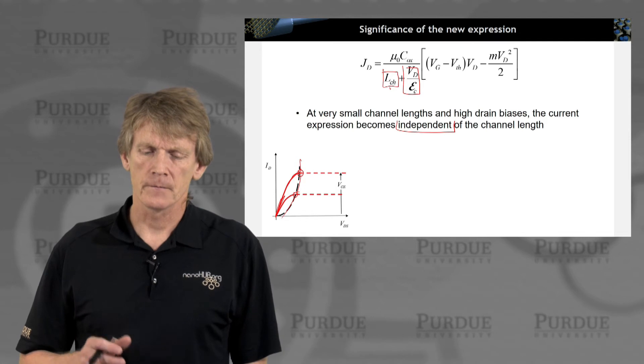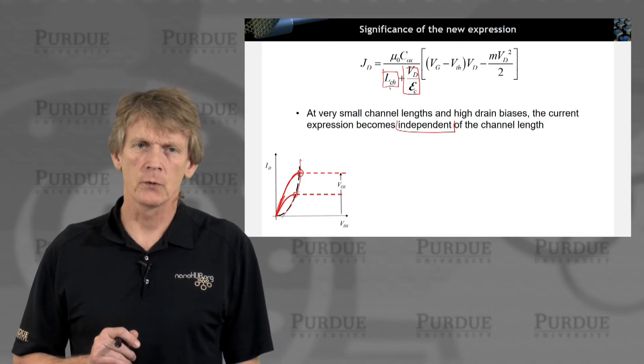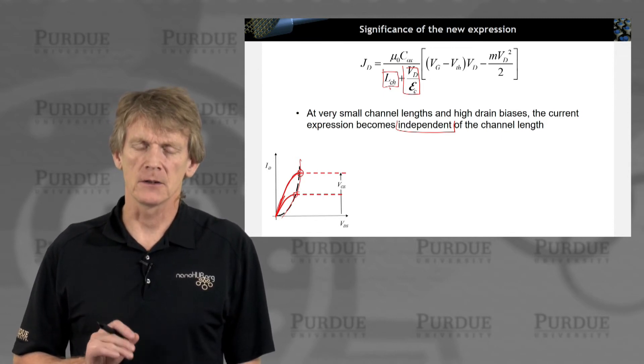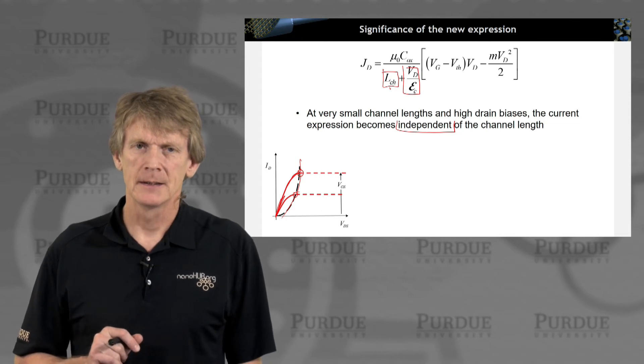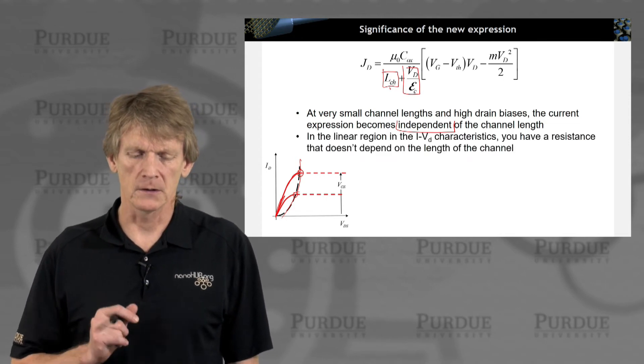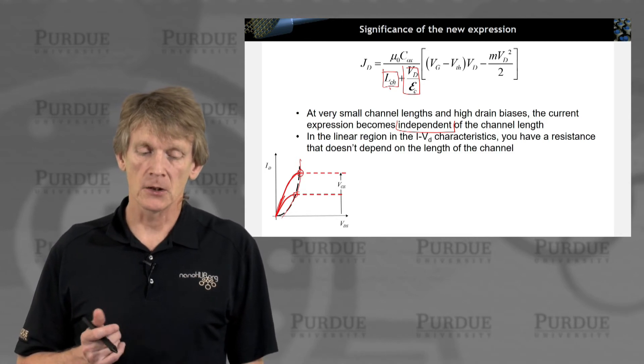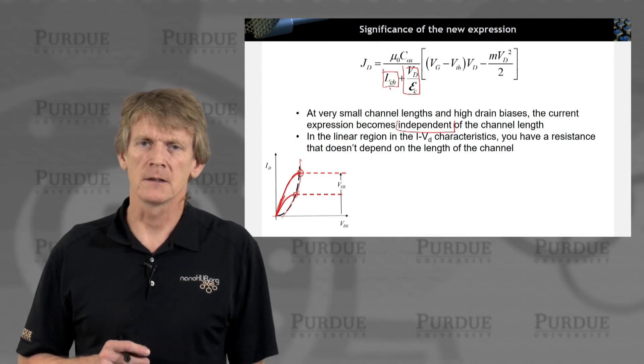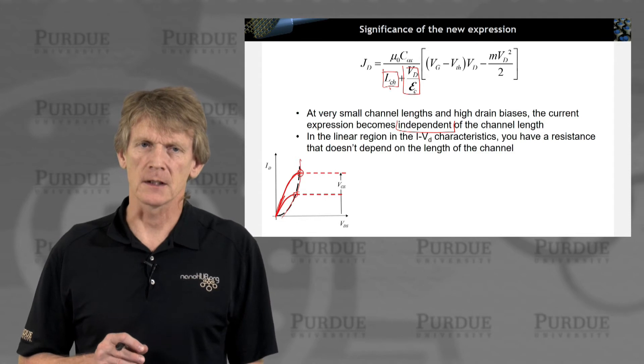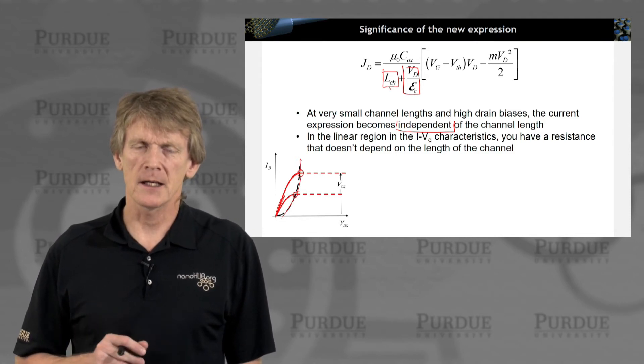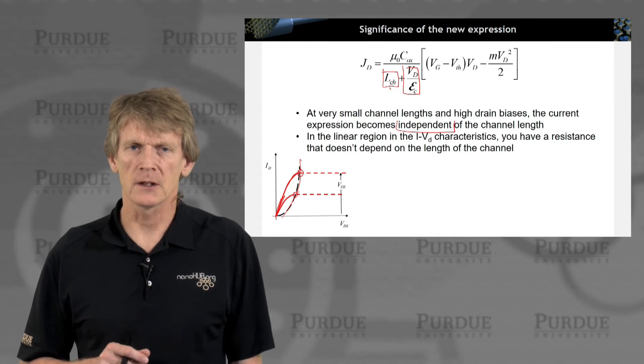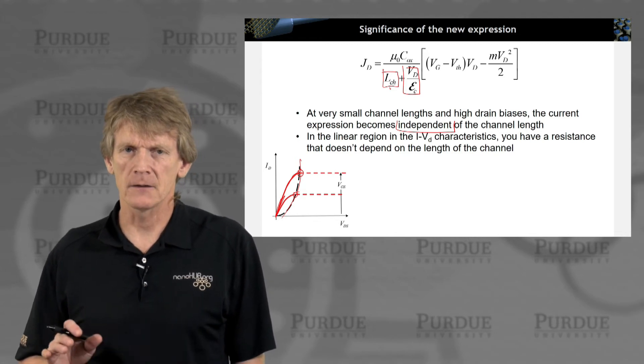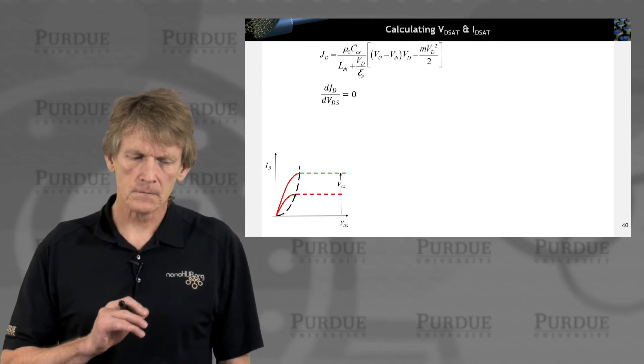That means you're pushing the charge through with an electric field and with a saturated velocity. Your carriers are running that fast through the structure that the channel length is not becoming important anymore. And it also means that in the linear region that the channel resistance we have calculated is independent of the channel length, which is kind of interesting. Again, it makes the case that at high velocity, once you're reaching critical velocities and high electric fields, what happens down the length of the channel is less important.